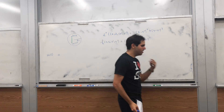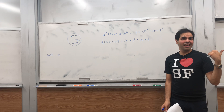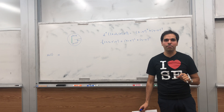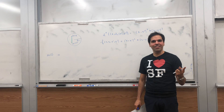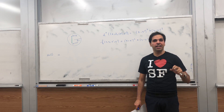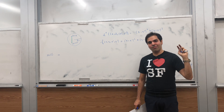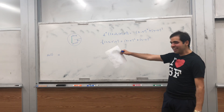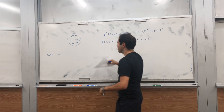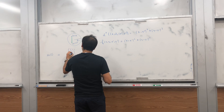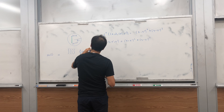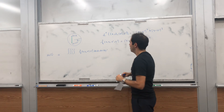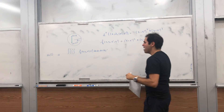For a function of one variable, you integrate the function and divide by the length of the interval. For functions of two variables, you double integrate and divide by the area of the domain. For functions of three variables, you triple integrate and divide by the volume. Here, you quadruple integrate because you have a function of four variables — f(x, y, x', y') — dx dy dx' dy', and you divide by what's called the hyper-volume of the domain.